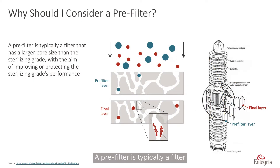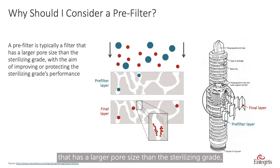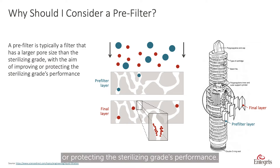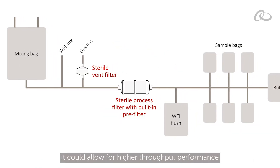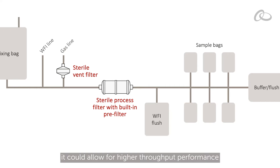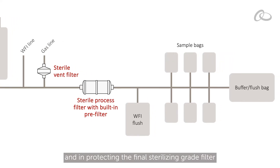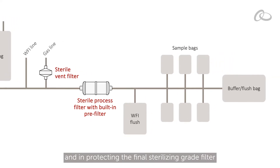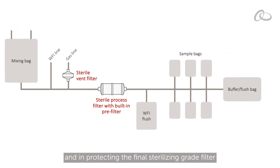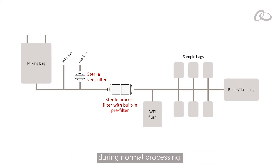A pre-filter is typically a filter that has a larger pore size than the sterilizing grade, with the aim of improving or protecting the sterilizing grade's performance. It's important because it could allow for higher throughput performance and protecting the final sterilizing grade filter during normal processing.